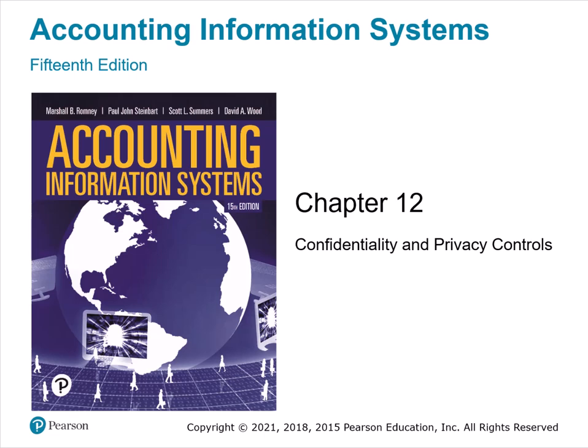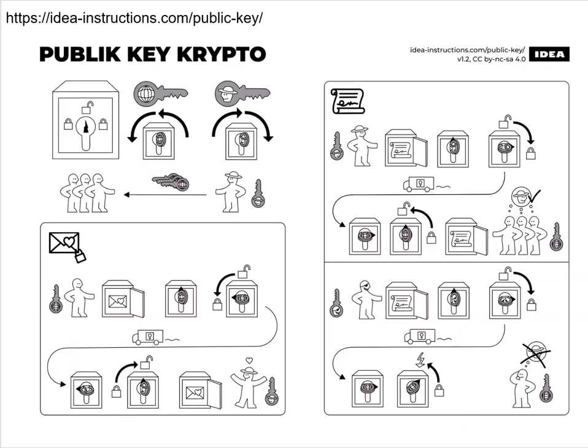This chapter of our AIS textbook talks about confidentiality and privacy controls. When we look at confidentiality and privacy controls, a lot of times they're built upon the idea of cryptography.